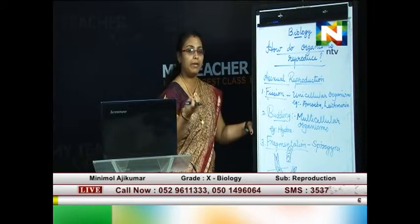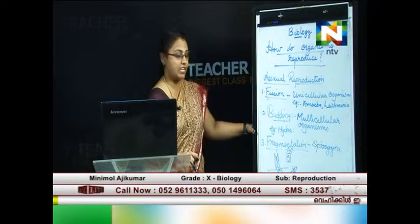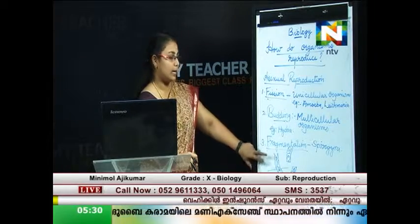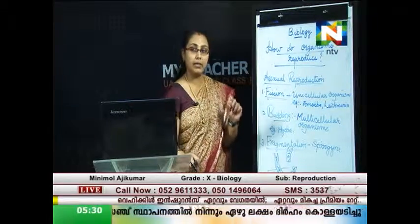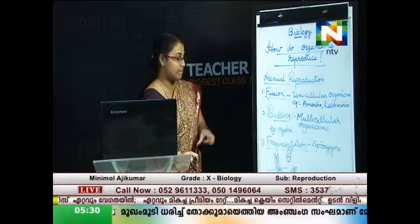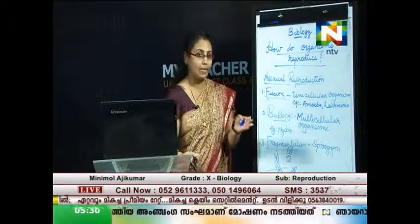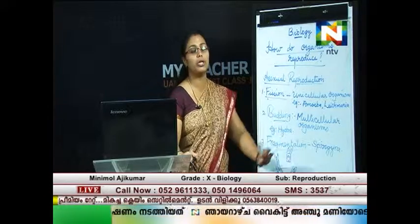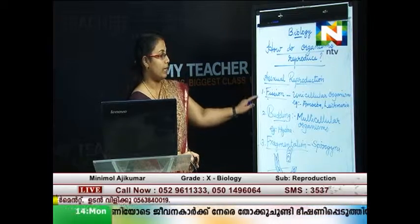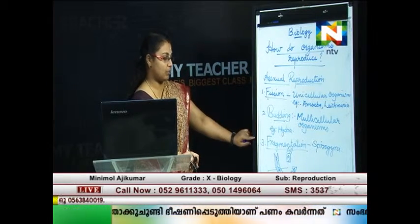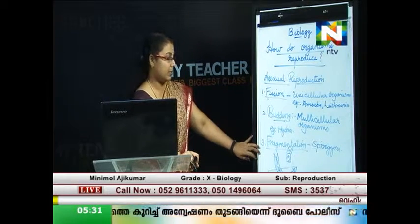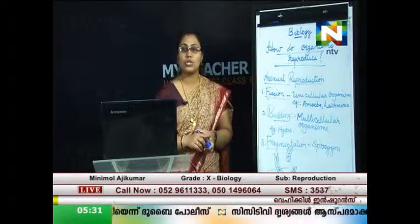Spirogyra is a filamentous green alga found in fresh water. Organisms like Spirogyra possess a multicellular filamentous body, and when this filamentous structure grows mature, it cuts into fragments or pieces and each piece grows into a new individual — that is called fragmentation. We have now discussed the three different modes of asexual reproduction: fission, budding, and fragmentation. Let us go for a short break now.